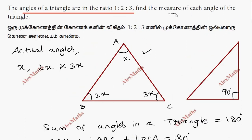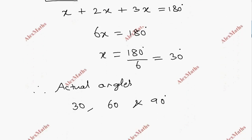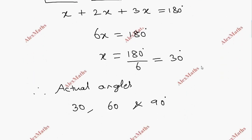So each of the angles — we have 30 degrees, 60 degrees, and 90 degrees.